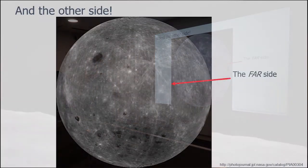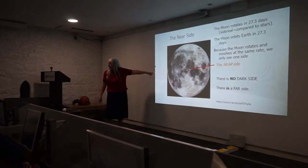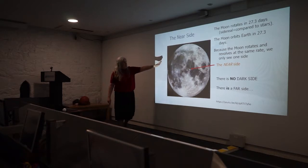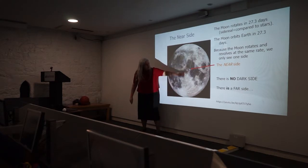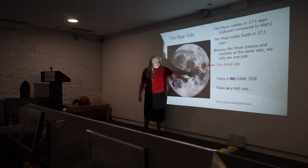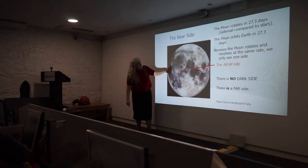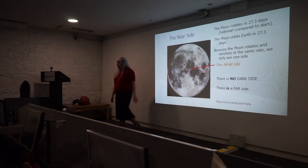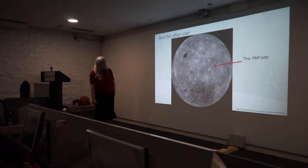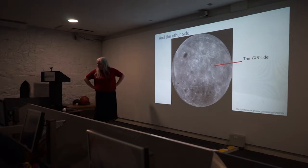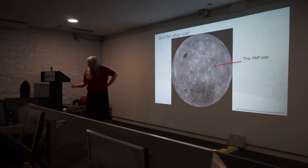As we go round, we always see the near side. The other side of the moon does get sunlight — it's the far side rather than the dark side. If I put up the far side image first, would you have known it was the moon? It does not look the same. We'd recognize the near side because we always see it — there's Tycho crater down here, the flat areas. The far side is significantly different, and we'll look at why.